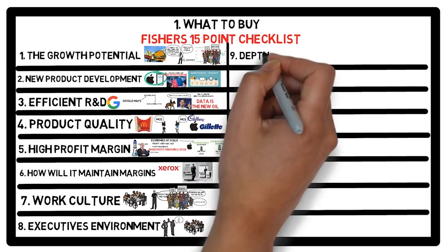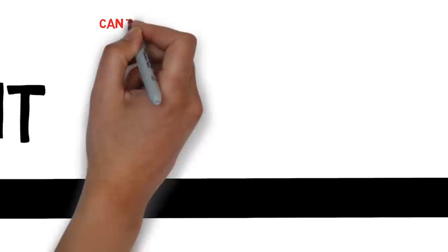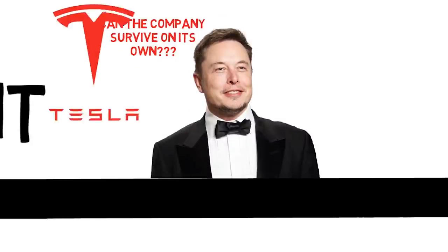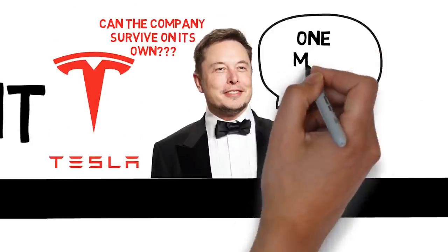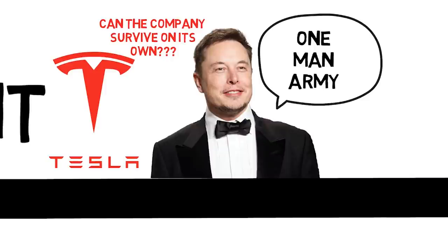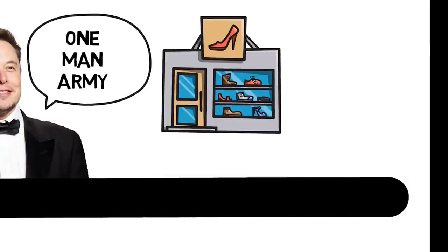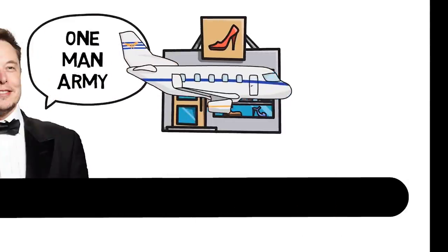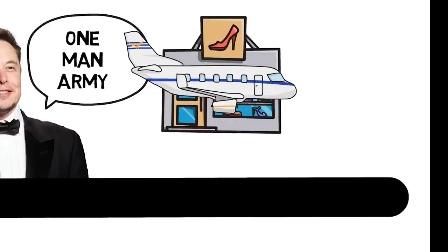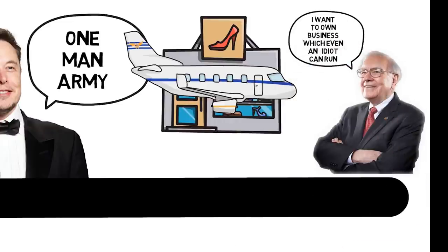Ninth, does the company have depth in its management? A company needs to be able to survive on its own without relying solely on one brilliant manager. Elon Musk is an example with Tesla. Once Musk is gone, will Tesla continue to grow and continually come up with mind-blowing and ambitious plans to change the world? Some businesses have such a great management system that the business actually runs on autopilot. It was this principle which let Buffett say, I like to own businesses which even an idiot can run.